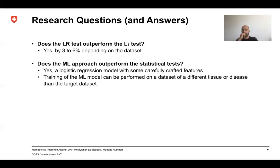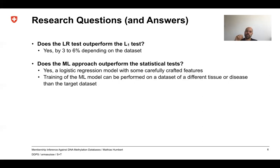Second, we examined whether the machine learning approach outperforms the statistical test. Yes, quite logically it outperformed the statistical test using a simple logistic regression model with carefully crafted features. Moreover, training the machine learning model on a different dataset than the target dataset also works quite well — even if the methylation data comes from different tissues or involves different diseases.